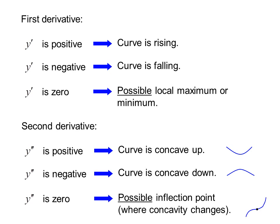If y double prime is 0, there's a possible inflection point — that is, a point where the concavity changes.